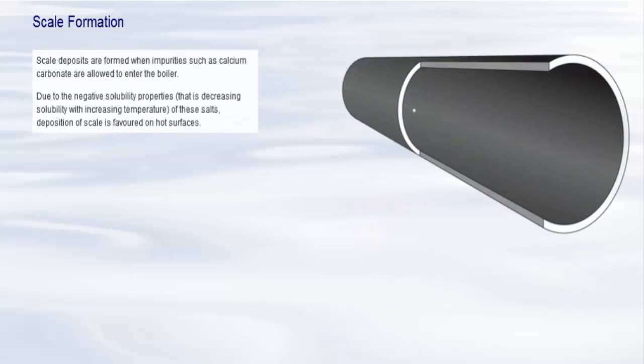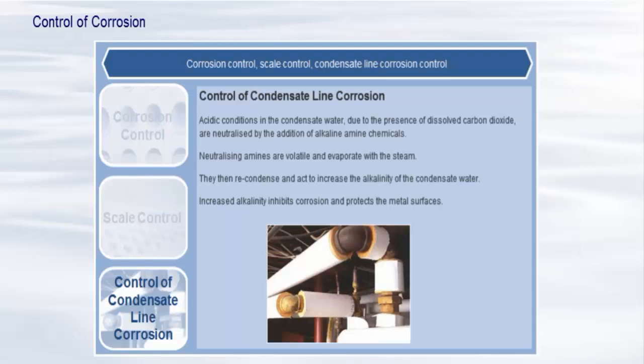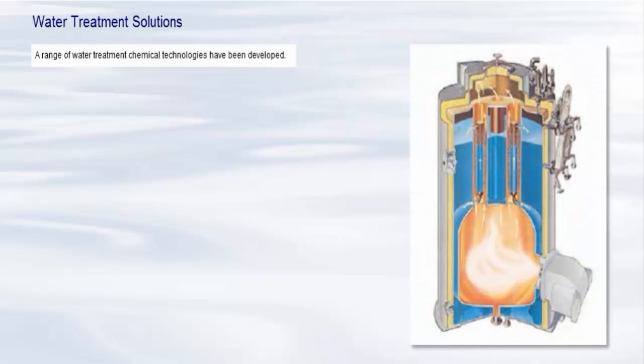Scale deposits are formed when impurities such as calcium carbonate are allowed to enter the boiler. Due to the negative solubility properties, that is, decreasing solubility with increasing temperature of these salts, deposition of scale is favored on hot surfaces. Scale deposits form hard and tenacious layers inside the boiler tubes. Such deposits will reduce heat transfer efficiency, cause overheating and potential tube failure.